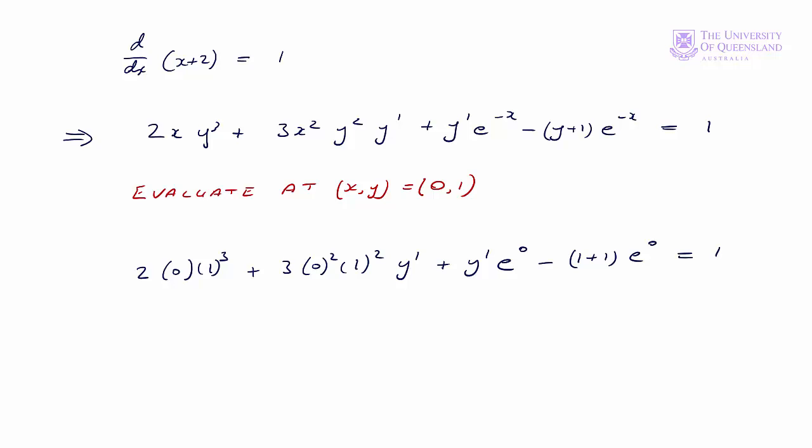That is we have 0 plus 0 plus y prime times 1 minus 2 equals 1, which implies y prime is equal to 3 at that point (0,1).